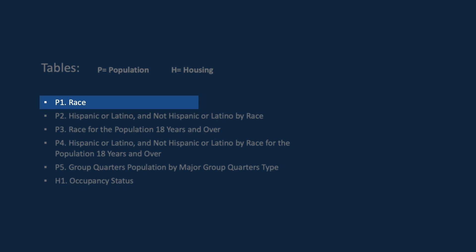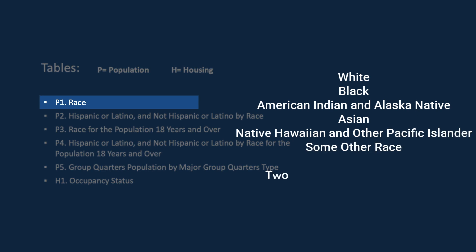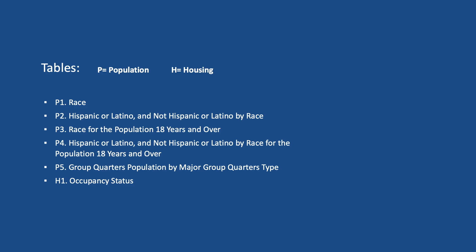The P1 table presents the population breakdown by race. Redistricting data is offered for White, Black, American Indian and Alaska Native, Asian, Native Hawaiian and other Pacific Islander, and some other race. It is also available for those who select any combination of these six races.